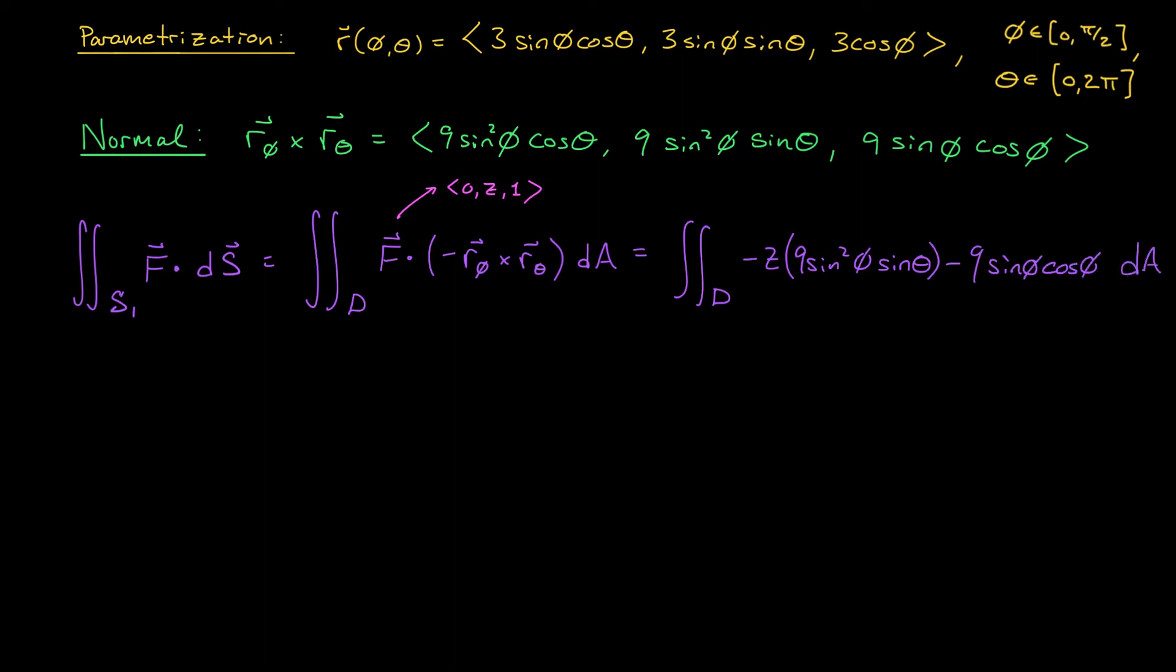Now at this point, we should figure out the bounds on our integrals. Well, it looks to me like θ is ranging between 0 and 2π, whereas φ is ranging between 0 and π/2. So I have the integral from 0 to 2π of the integral from 0 to π/2 of this expression dA. Now, of course, I want everything in terms of my parameters θ and φ. So I'm going to replace this Z here with 3 cos φ. That's going to give me an integrand of −27 sin² φ cos φ sin θ − 9 sin φ cos φ dφ dθ.